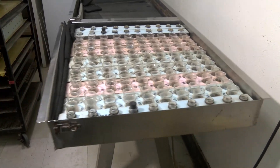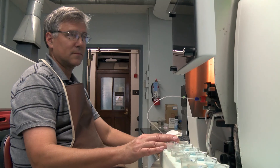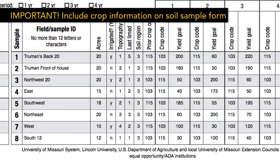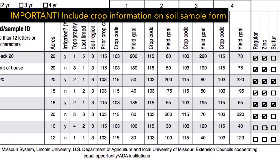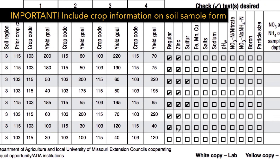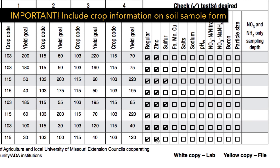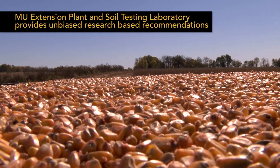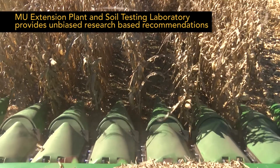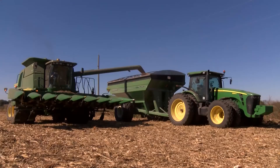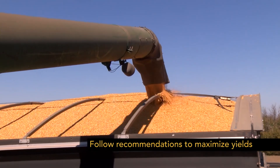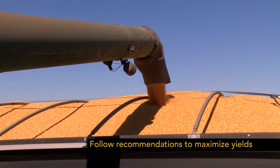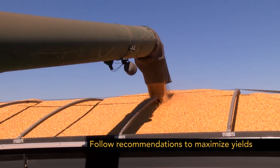The sample is ready to be submitted to the MU Extension Soil Testing Laboratory for analysis. You should have the results in about four to five working days. It's important for the client to fill in all the information we need in order to give the right recommendations. So if they don't choose the crop they want to grow, then we wouldn't know what recommendations to give. We make sure we are providing the educational information the farmer needs to manage his fields properly, so there is no under-application or over-application, and they can maximize yields by following the recommendations.